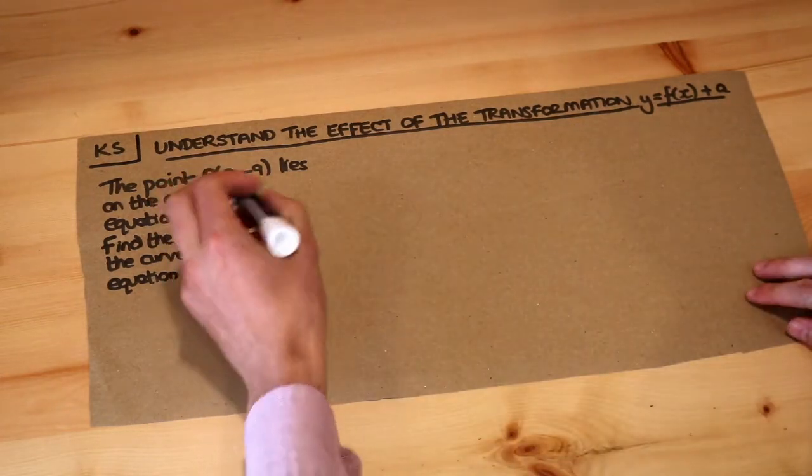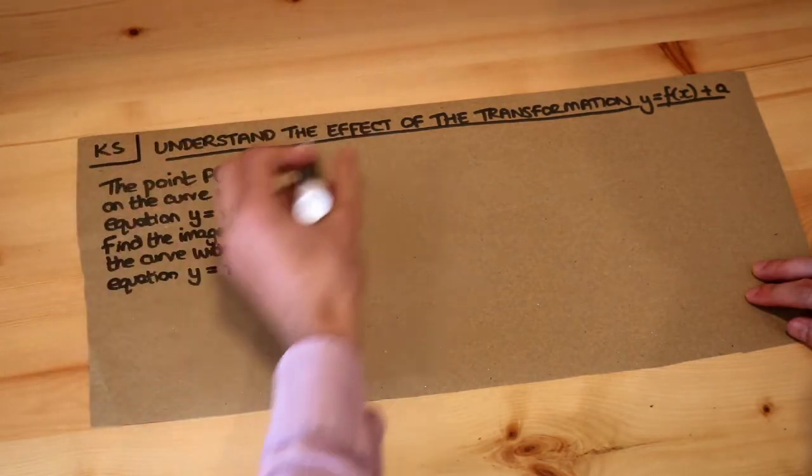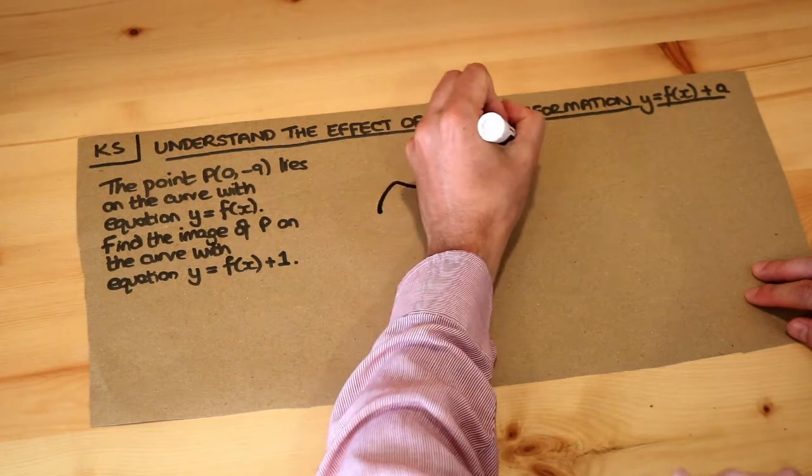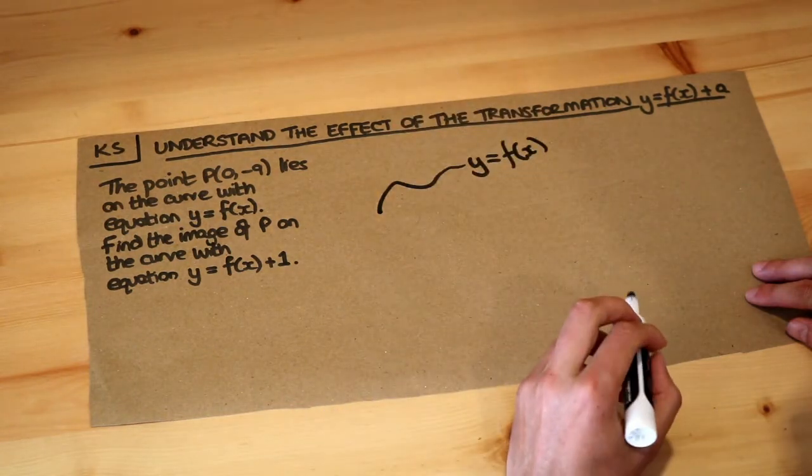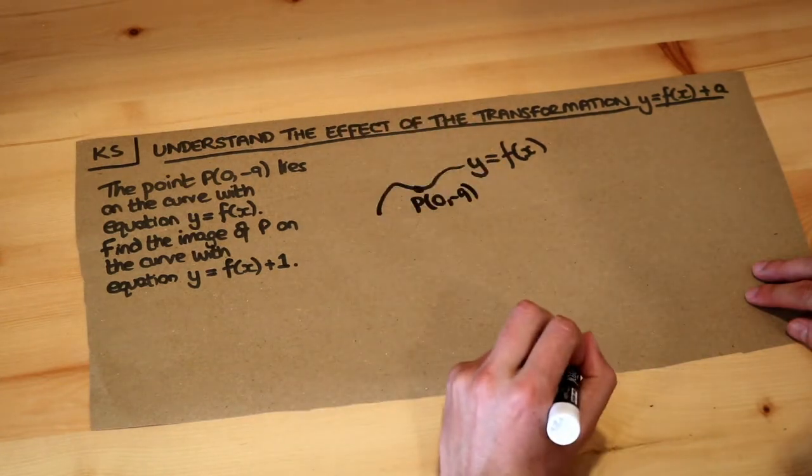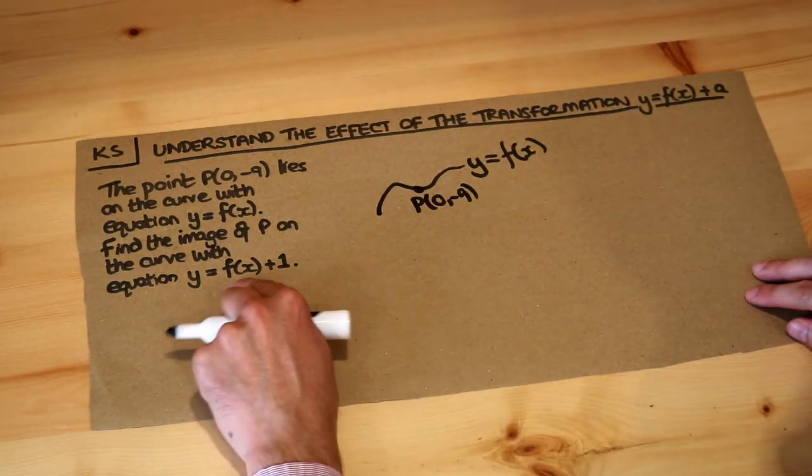So we have some original curve y equals f of x and it doesn't really matter what it does. This is y equals f of x for some function f. We don't know what it is, but we know that it goes through the point 0 comma minus 9.